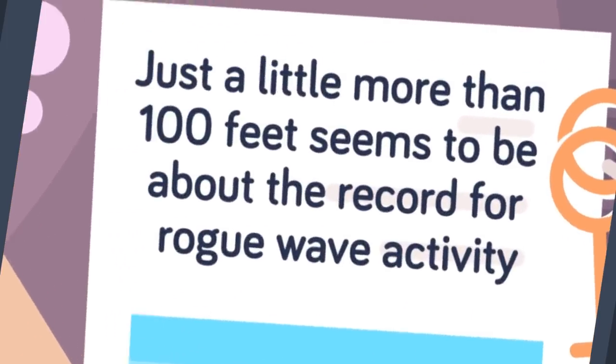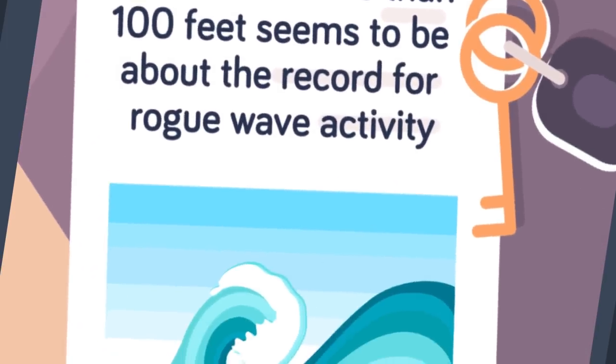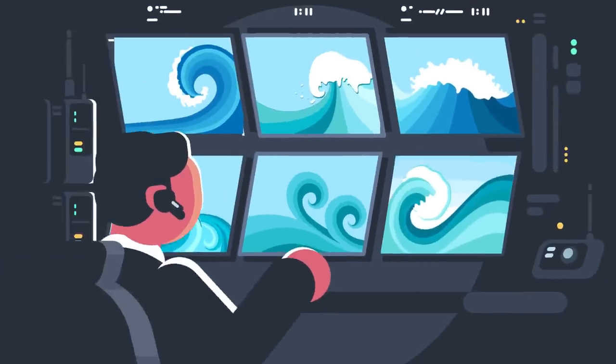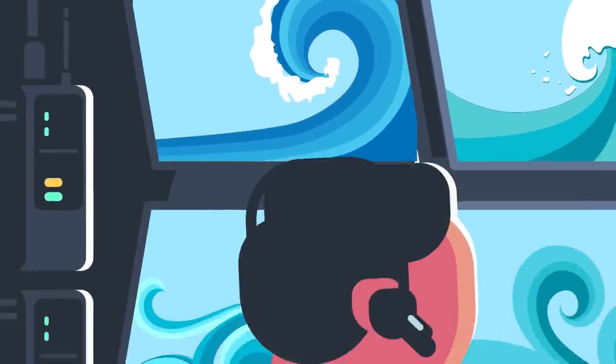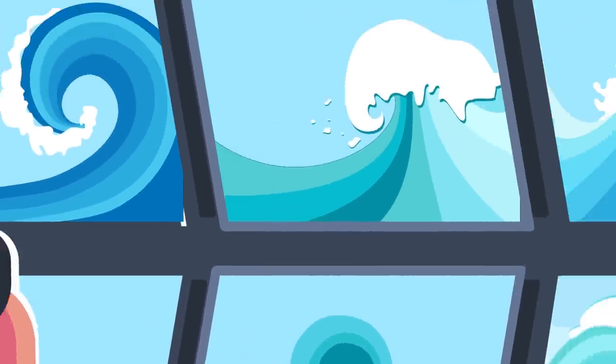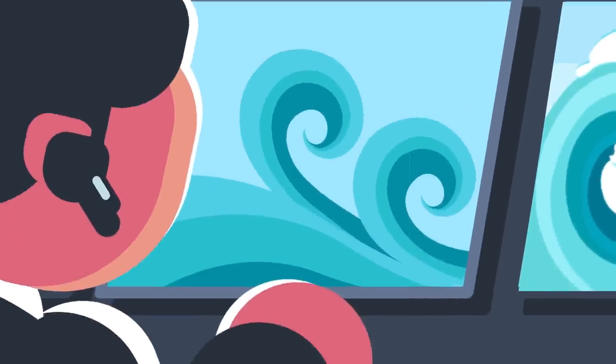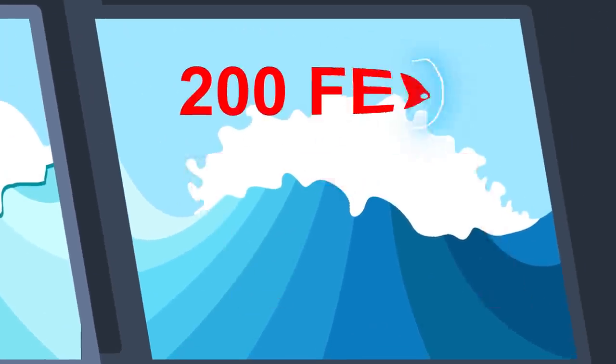As far as records go, a little more than 100 feet seems to be about the record for rogue wave activity. But we've really only just begun monitoring the ocean for rogues, so that maximum is subject to revision. Theoretically, a rogue wave could reach almost 200 feet.